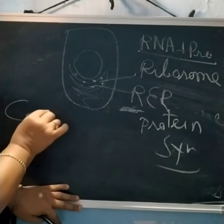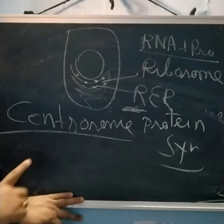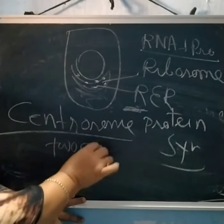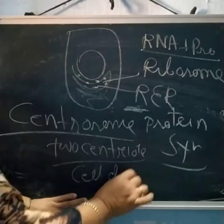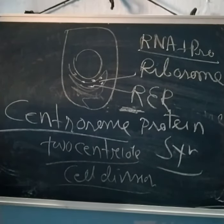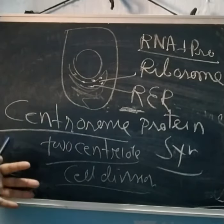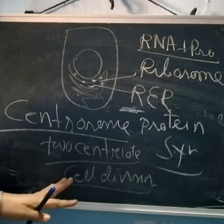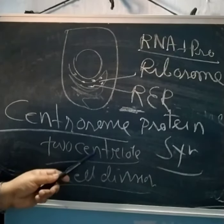Another cell organelle is the centrosome, which is made up of two centrioles. Centrioles play a special role in cell division. They also produce cilia and flagella — structures present in certain cells. For example, cilia are present in Paramecium and flagella are present in Euglena, and both these structures are made by centrioles.